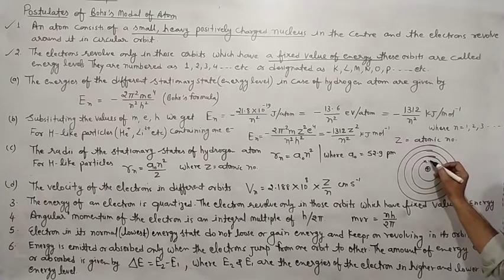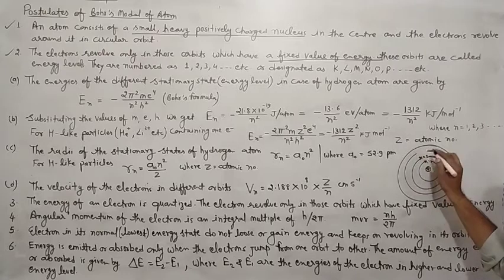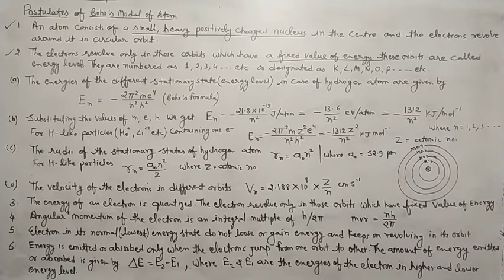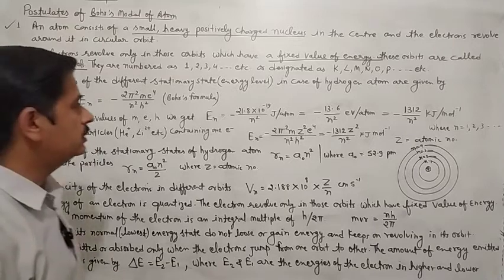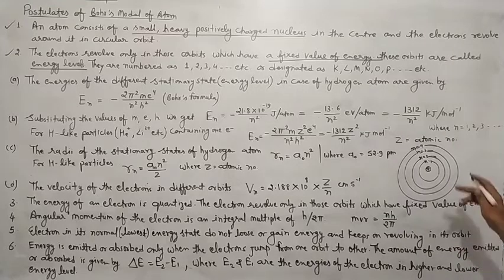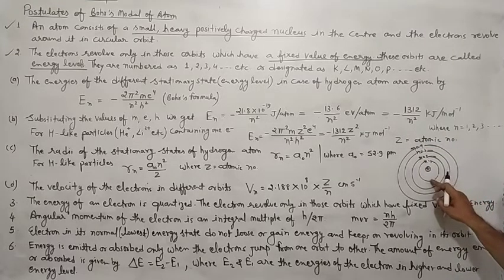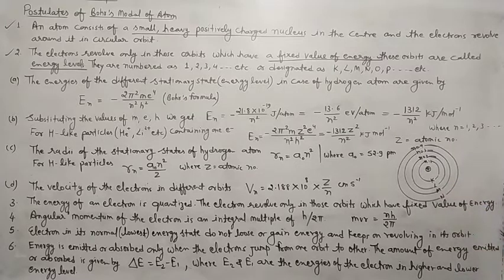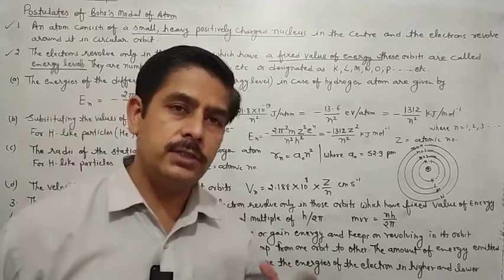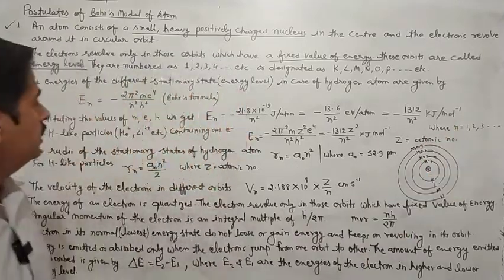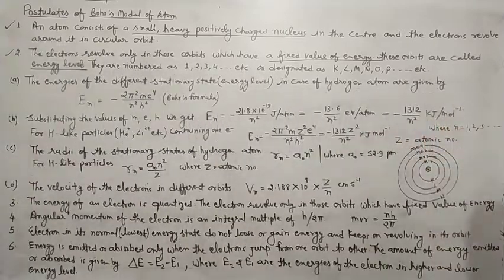Jaise first hai, isme n equals to 1. Second hai, isme n equals to 2. Third hai, n equals to 3. And fourth hai, n equals to 4. So here n represents the orbit. These orbits are also called energy shells, energy levels, and stationary states. They are designated as K, L, M, N. Har shell ki ya har energy level ki apni ek energy hoti hai. Jaise first jo energy level hai, uski energy kam hai. Jaise jaise aap nucleus se door jaate jaenge, waise waise uski energy jo hai, woh increase hoti chali jaayegi.